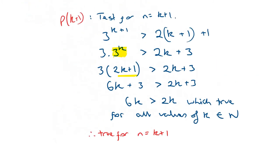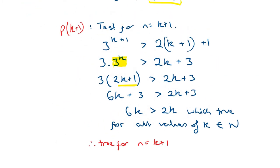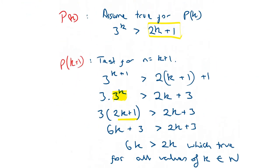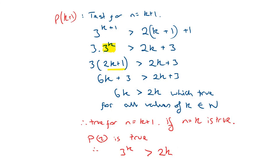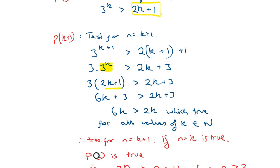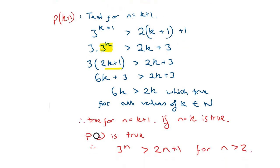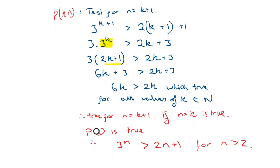Since it's true for n = k+1 based on the assumption it was true for n = k, and it's true for the first case, therefore 3 to the power of n is greater than 2n + 1. So there are two inequalities questions covered on proof by induction — the last one to do is De Moivre's theorem.